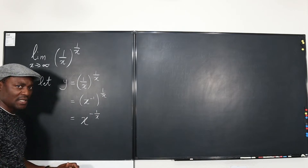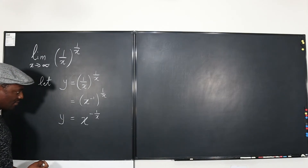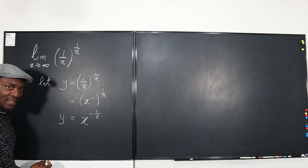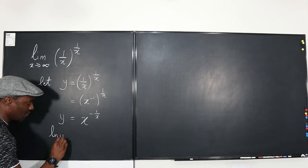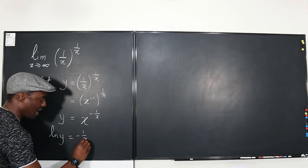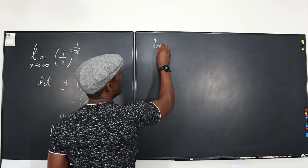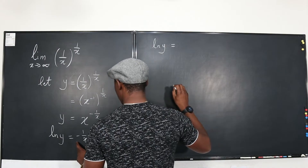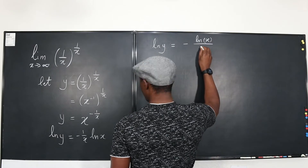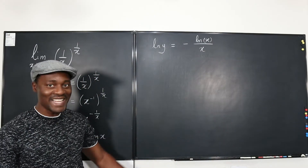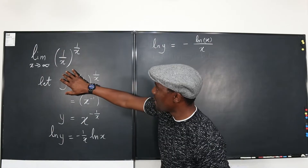This makes life a lot easier. Since y equals x to the (-1/x), I can bring the exponent down by taking the natural log of both sides. The natural log of y will equal (-1/x) times the natural log of x, which can be written as: ln(y) = -ln(x) / x.